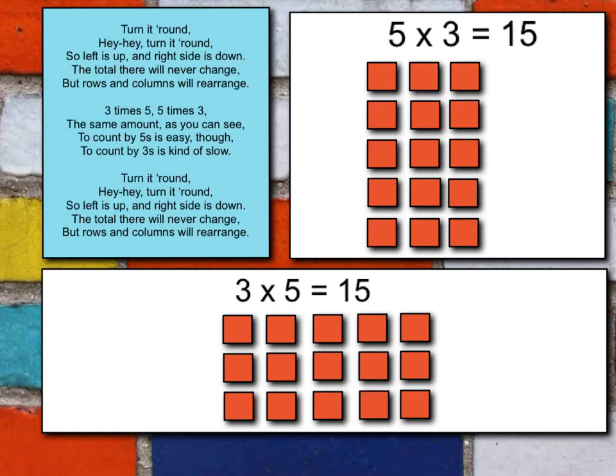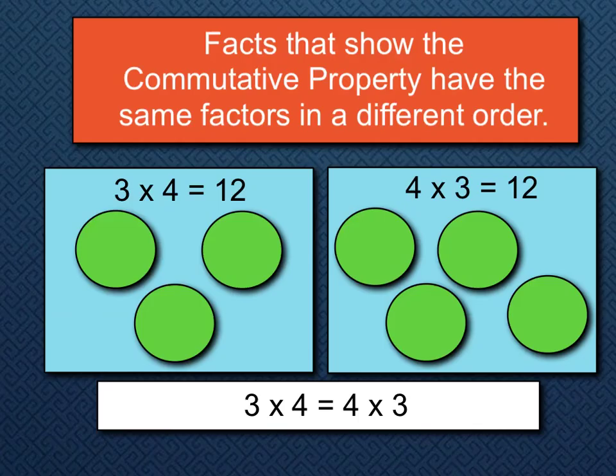Got it? Let's look at some more. Now that we're done with that fun little bit, let's look at facts that show the commutative property. Facts that show the commutative property have the same factors, just in a different order. So let's look at these two problems: three times four and four times three. They both equal twelve — the same product.